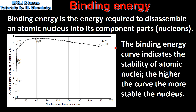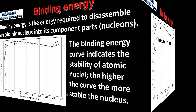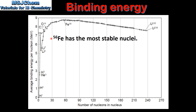On the left we have the binding energy curve which indicates the stability of atomic nuclei. The higher the curve, the more stable the nucleus. By looking at the binding energy curve we can see that the isotope iron-56 has the highest binding energy per nucleon, which means it has the most stable nuclei.